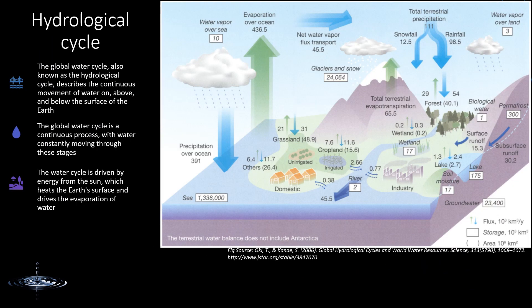Now let's talk more about the hydrological cycle. The global hydrological cycle is the process through which water circulates between Earth, atmosphere, ocean, and land surfaces. The cycle involves water movements in the form of precipitation, evaporation, and runoff.